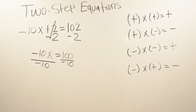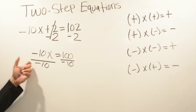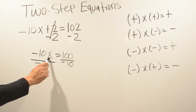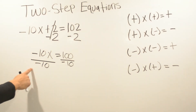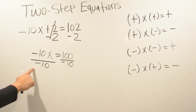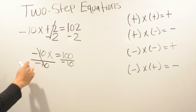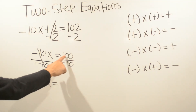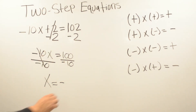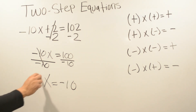We divided by negative 10 instead of positive 10. The reason is that our variable always has to be by itself and always has to be positive. If we divided by positive 10, a negative times a positive would give us a negative on the right-hand side. But if we divide by negative 10, a negative times a negative is going to be a positive, which is why we divide by negative 10. So the negatives cancel, leaving x positive. On the right-hand side, a negative times a positive gives a negative, and 10 goes into 100 ten times. So x equals negative 10.